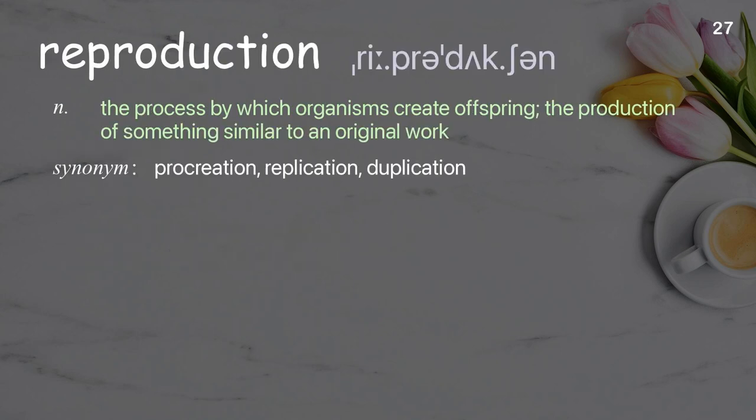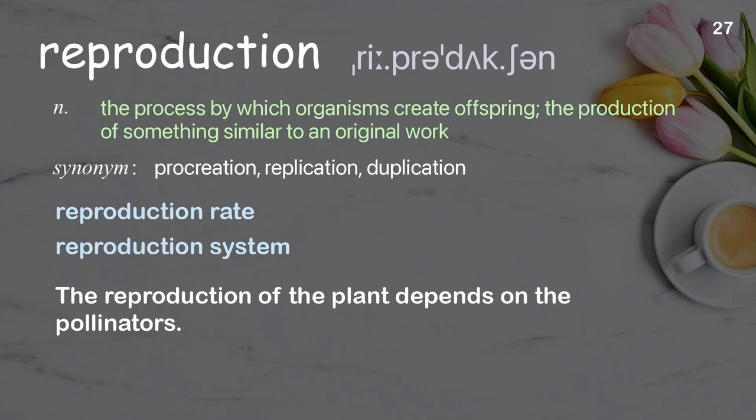Reproduction: The process by which organisms create offspring; the production of something similar to an original work. Examples: Reproduction rate, reproduction system. The reproduction of the plant depends on the pollinators.